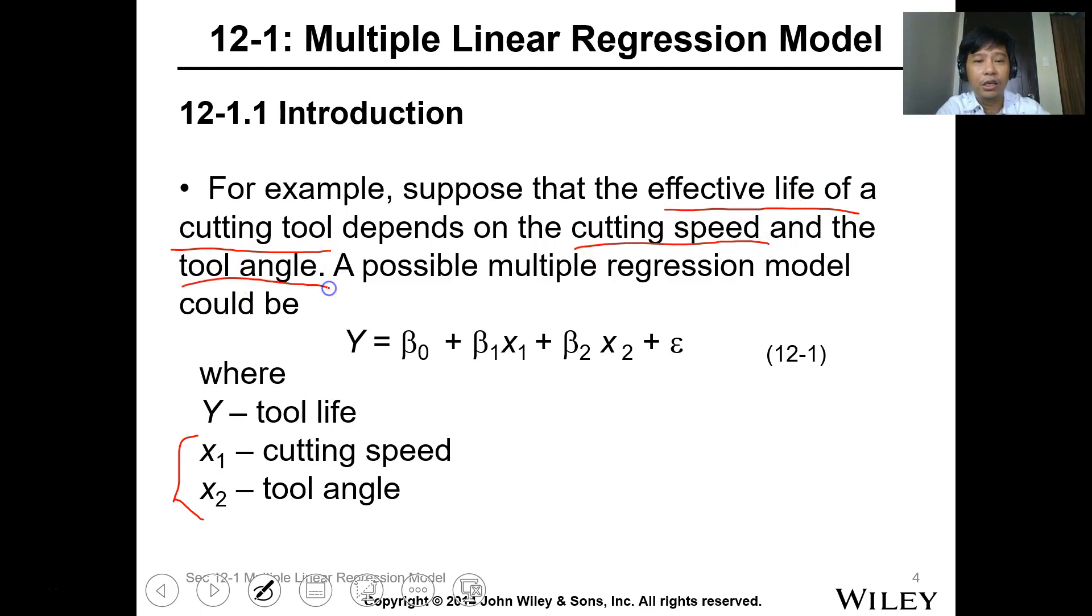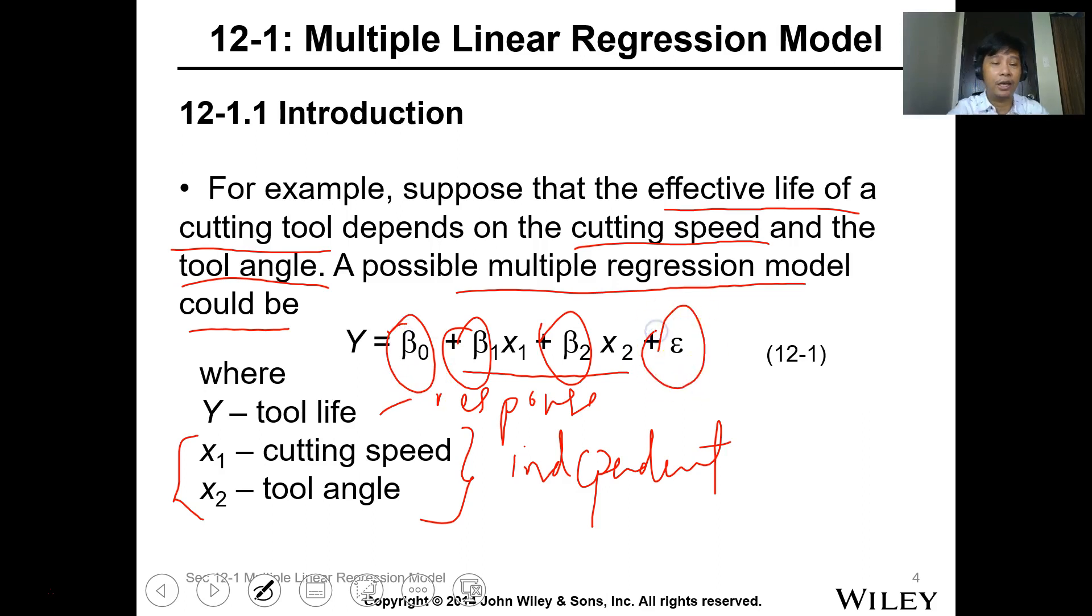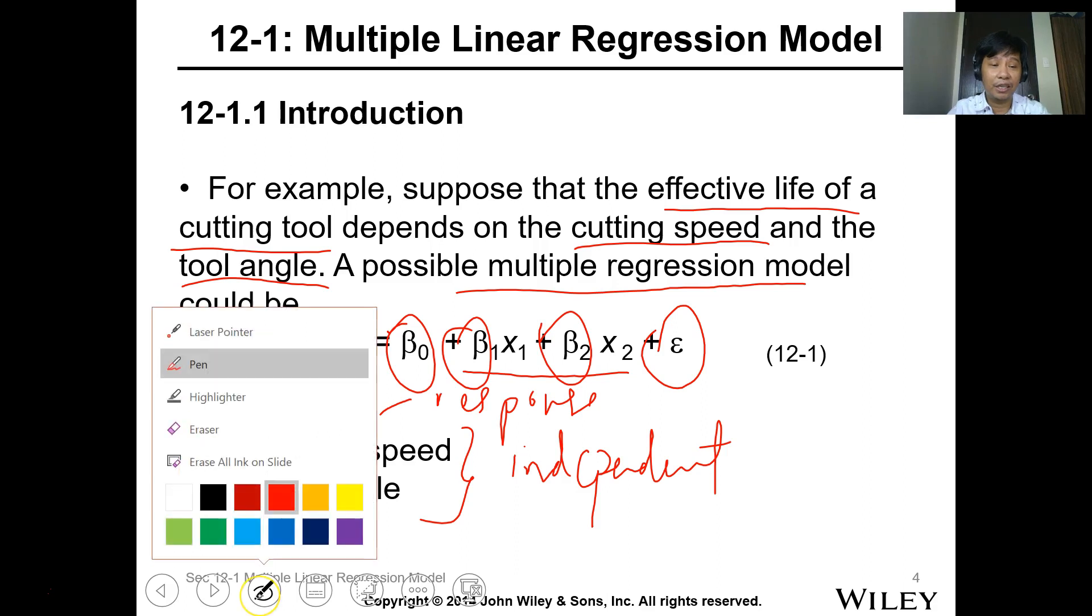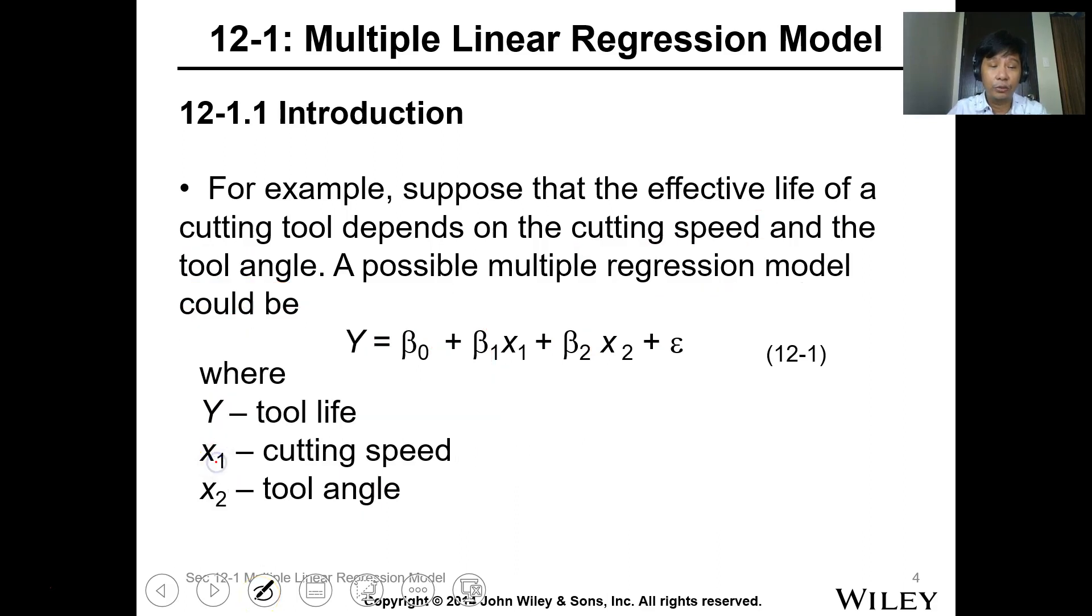For example, suppose that the effective life of a cutting tool depends on the cutting speed and the tool angle. A possible multiple regression model could be Y equals beta 0 plus beta 1 x1 plus beta 2 x2 plus epsilon, where Y is tool life, x1 is cutting speed, x2 is tool angle. These are your input, independent variables or regressors.